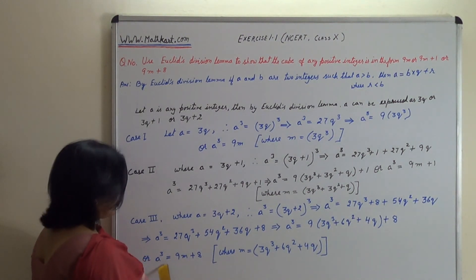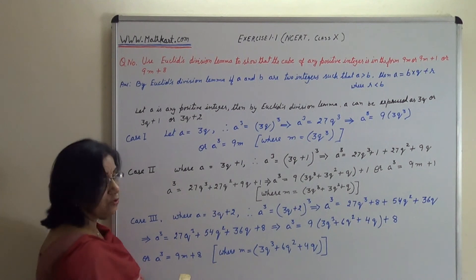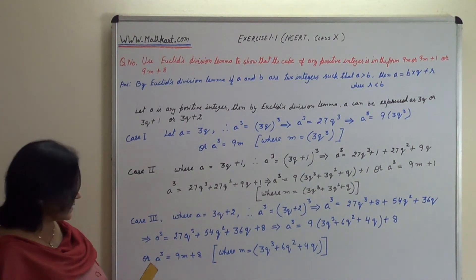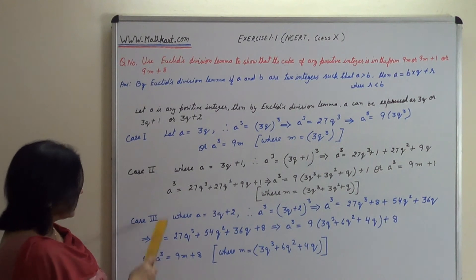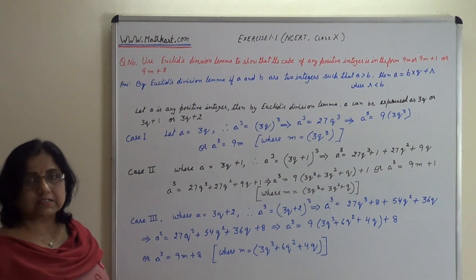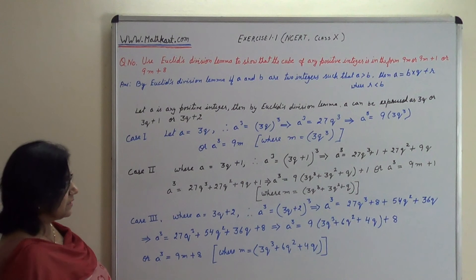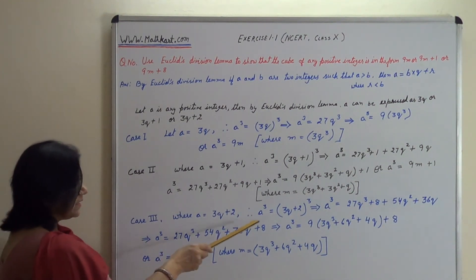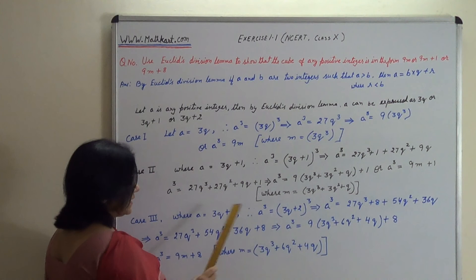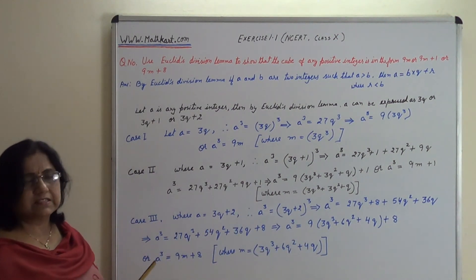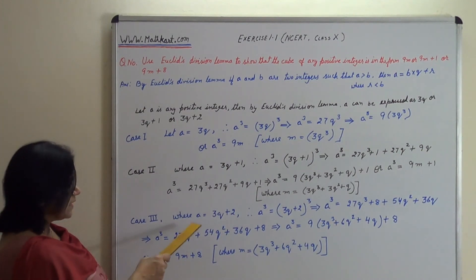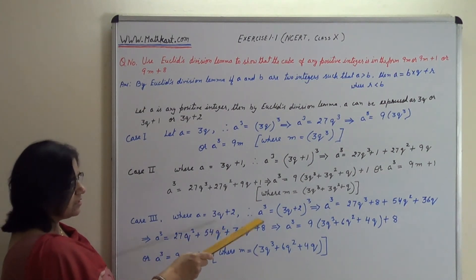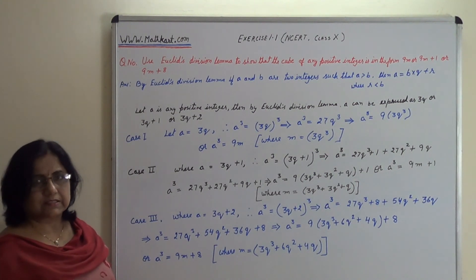So a cube equals 9m plus 8 — this question carries 4 marks, children. If you write this much, you will get 4 marks. Note that I have been writing a cube equals on every line because I was changing lines horizontally. When you write vertically, you don't need to write a cube each time — write it once and use an equals sign going down each time.